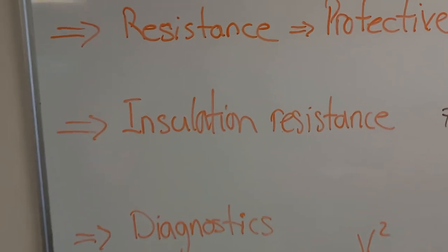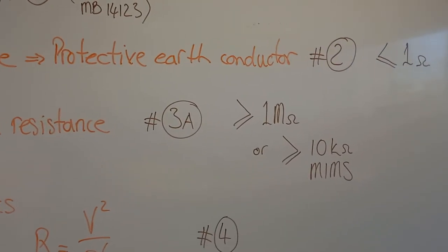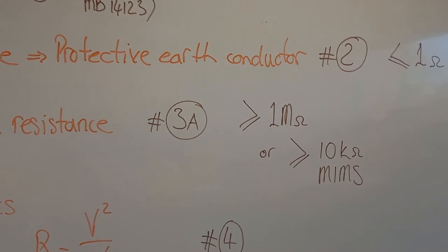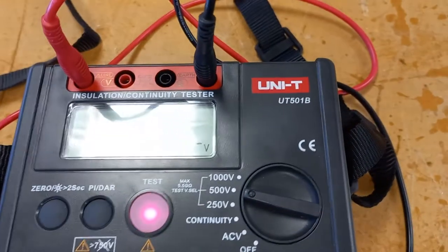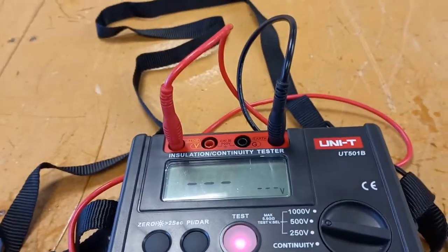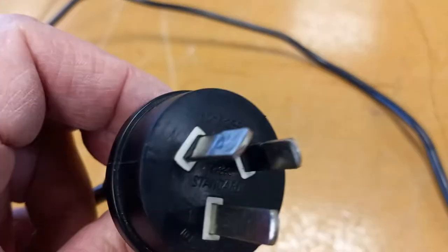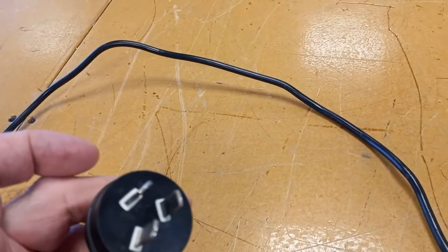The next test is the insulation resistance test. For this particular appliance, because it's not an MIMS element, the minimum insulation resistance is 1 megaohm. This is done using the insulation resistance tester at 500 volts DC, because we're measuring the resistance of the insulation. That is done by connecting the phase and neutral together at the plug, and then to earth.